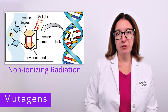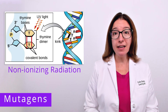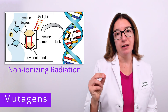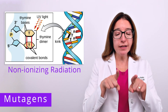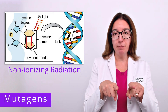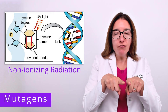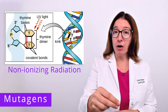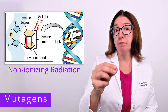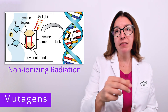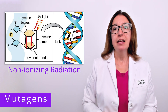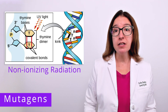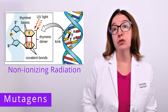Non-ionizing radiation, such as UV light, leads to the creation of thymine dimers. This is where two adjacent thymine bases become covalently bonded, such that they cannot bond with their complementary bases on the opposite DNA strand. This leads to DNA replication errors and frameshift or point mutations.